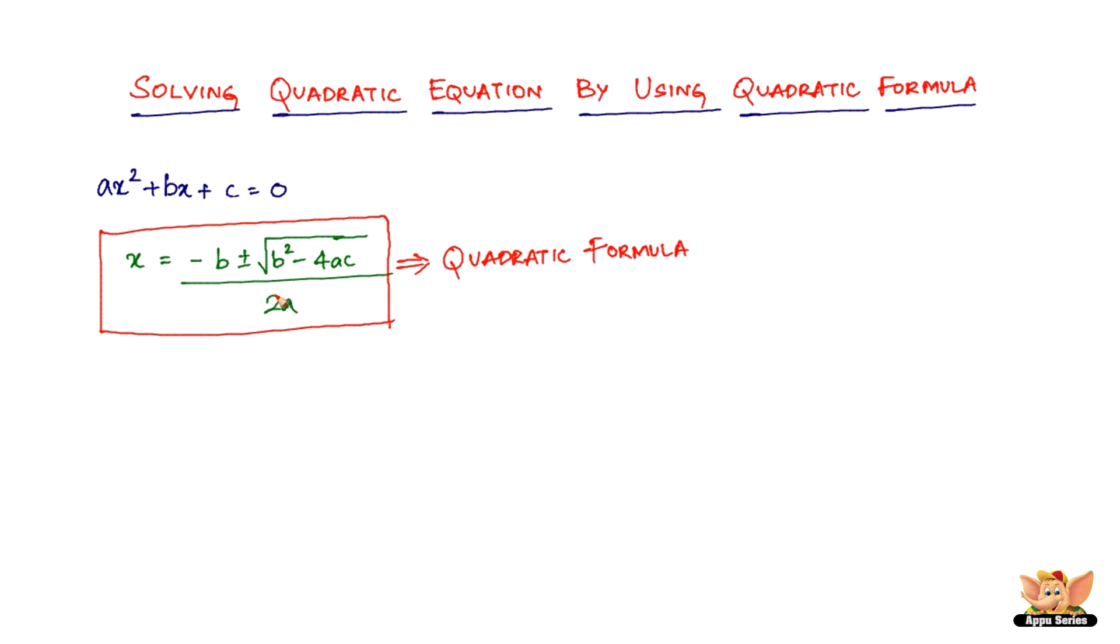Now, another important thing is the b squared minus 4ac part. This is denoted by capital D and is called the discriminant. Why is this important?